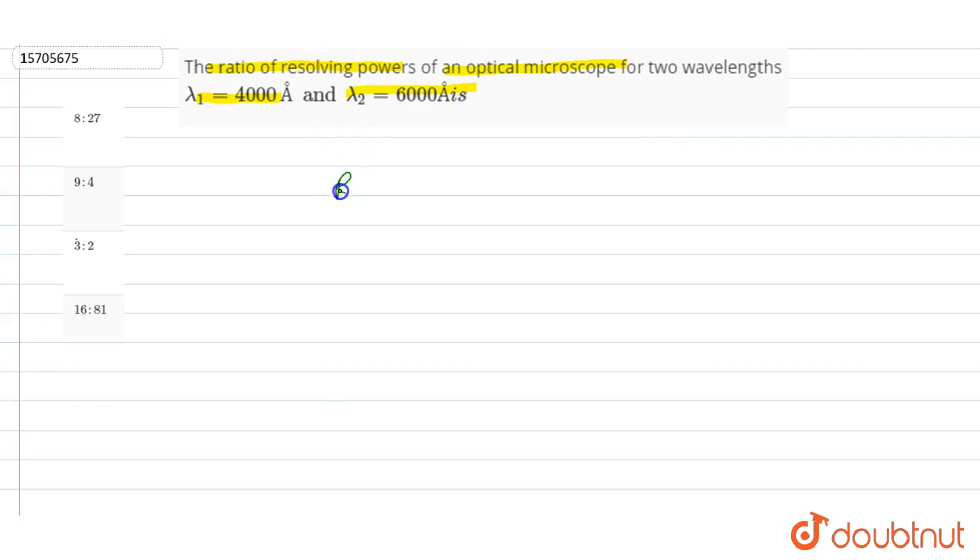What is the ratio of the resolving power? Resolving power is inversely proportional to lambda that is wavelength. This is 1 upon lambda that is wavelength. And in this condition, this is for resolving power of microscope.